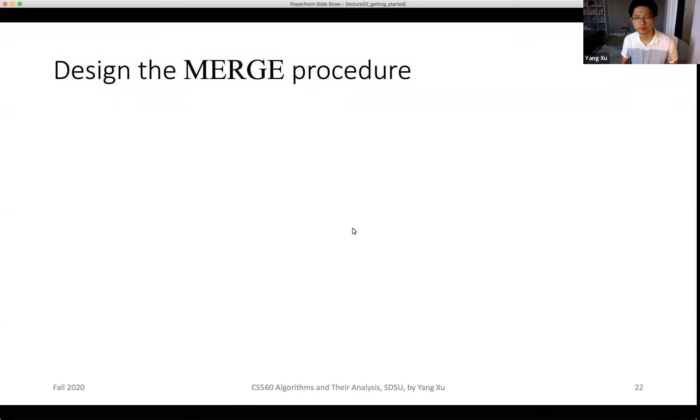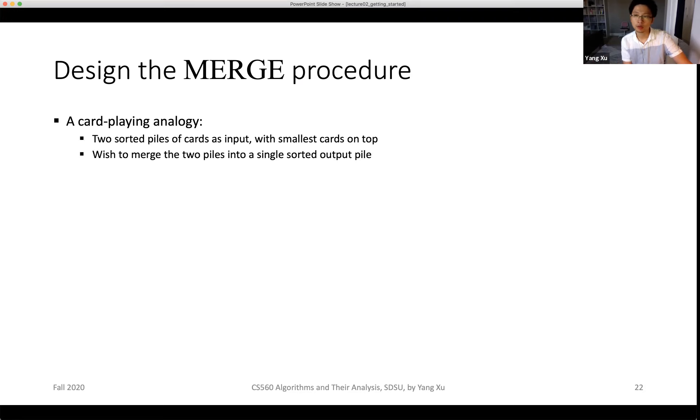To understand the design idea of the merge sort procedure, we can make an analogy to a playing cards example. This time, imagine that we have two sorted piles of cards in front of us, both with the smallest cards on top. Our goal is to merge the two piles into a single sorted pile. One strategy is to choose the smaller of the two cards on top of the two piles and place it into the output pile.